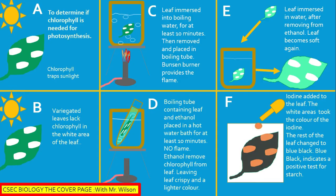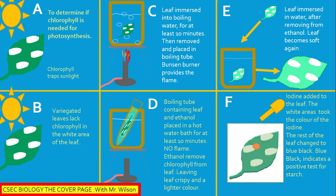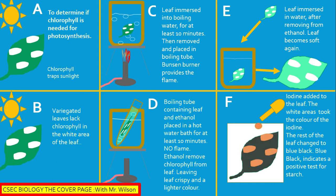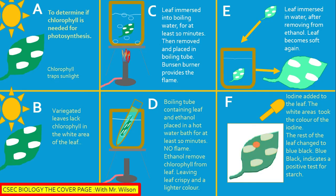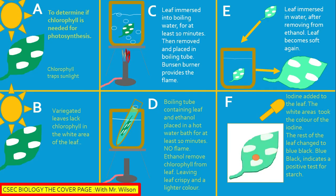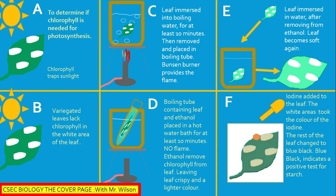Lay the leaf out on a white tile and add the reagent iodine. When iodine is added, the color changes from green to what we refer to in science as blue-black. The white area of the leaf did not change because it has no starch. However, the area that contains starch changed to blue-black, while the white area took the color of the iodine, which is red-brown. So a positive test for starch using iodine is always blue-black.